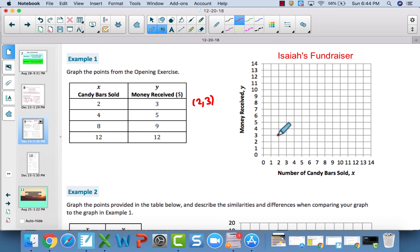2, 3 goes right there. My next coordinate pair, x is 4, y is 5, so that's over to 4, up to 5, which is right here. Next is 8 as my x, 9 as my y, so I go over to 8, up to 9. Then my next one is 12 for the x and 12 for the y, so I'll go over to 12, up to 12, which is right here.